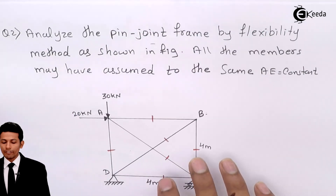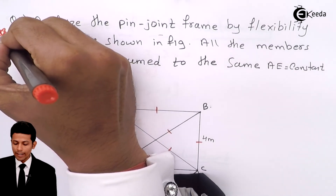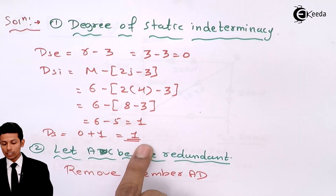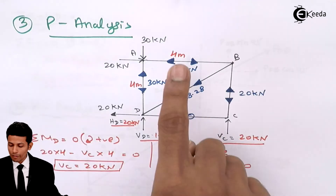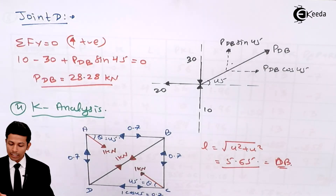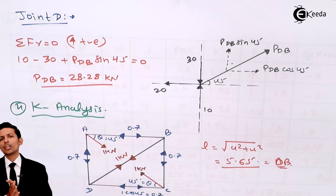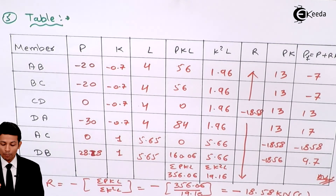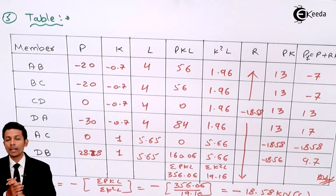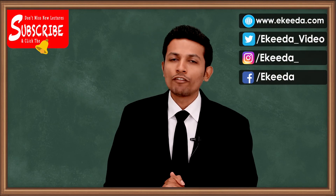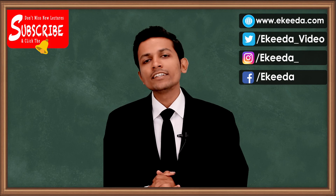This is a very important 10-marks question from an exam point of view. To summarize: check the degree of static indeterminacy (here it is 1), remove one member, apply P-analysis to find all loads, then do K-analysis applying one kN at the removed member location. Build the table and compute R using summation PKL upon summation K-squared L. Since AE is constant it cancels. I hope you understood — don't forget to share with your friends. Thank you.